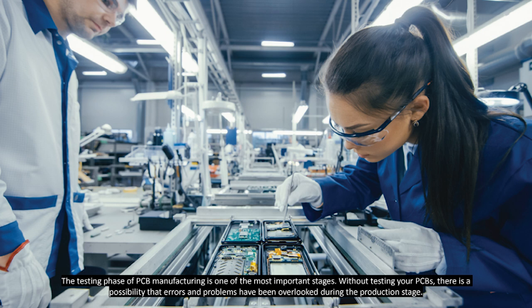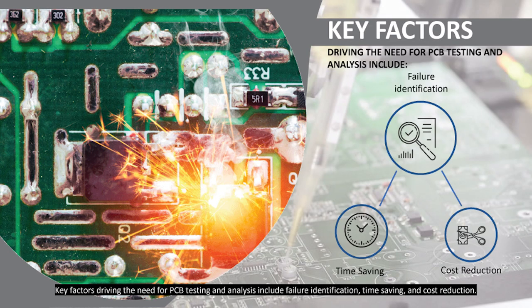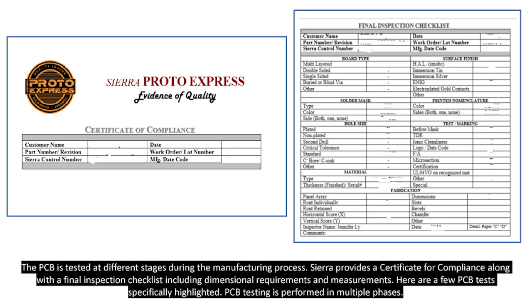The testing phase of PCB manufacturing is one of the most important stages. Without testing your PCBs, there is a possibility that errors and problems have been overlooked during the production stage. Key factors driving the need for PCB testing and analysis include failure identification, time saving, and cost reduction. The PCB is tested at different stages during the manufacturing process. CIERA provides a certificate for compliance along with a final inspection checklist including dimensional requirements and measurements.